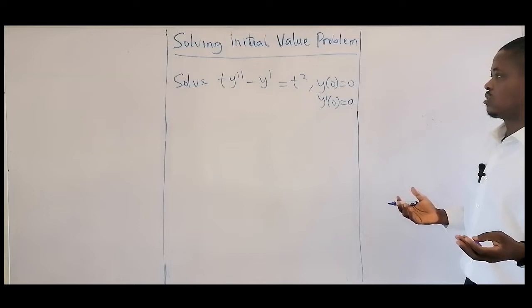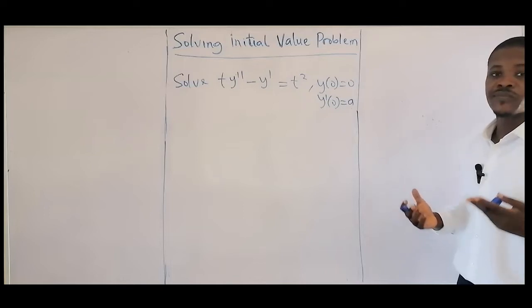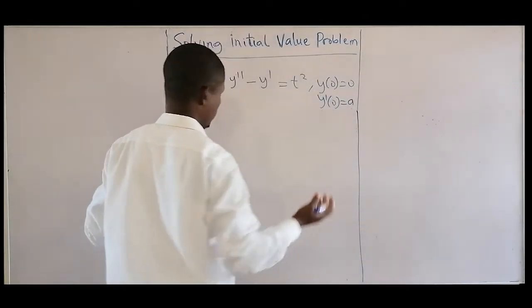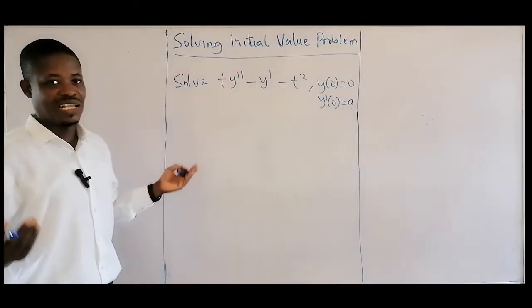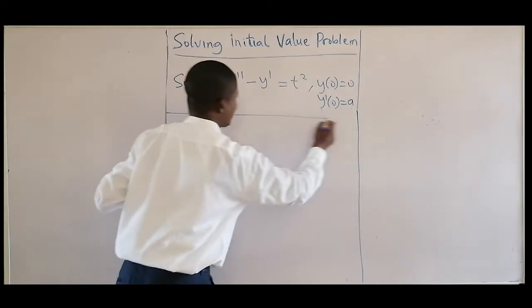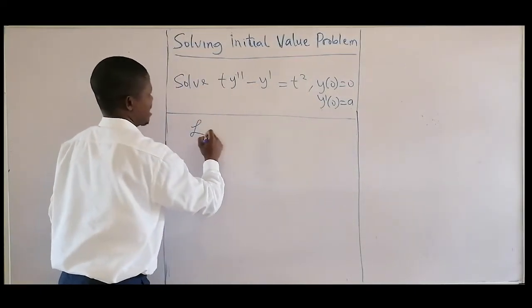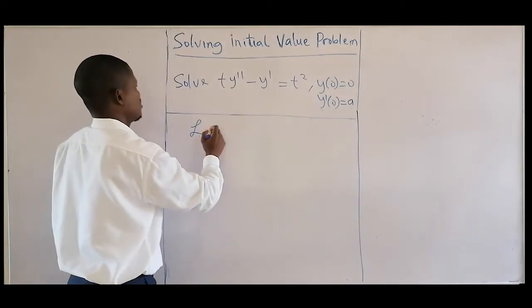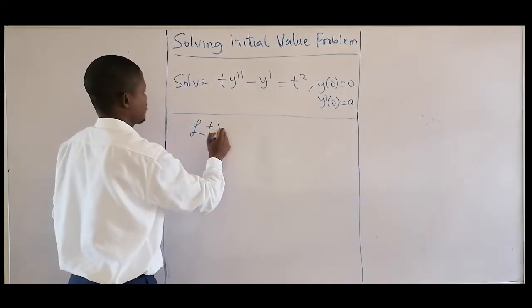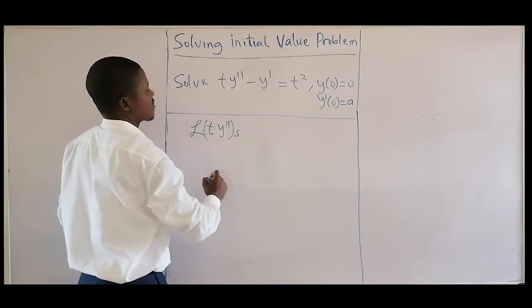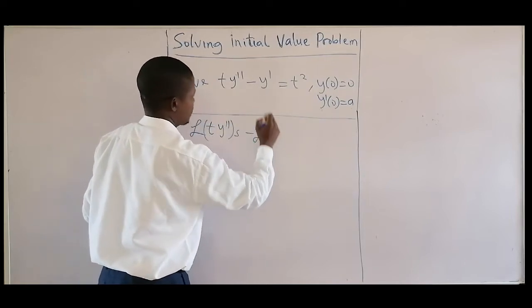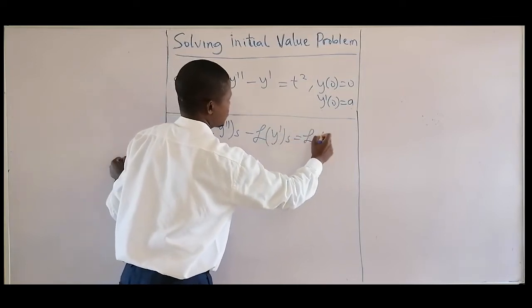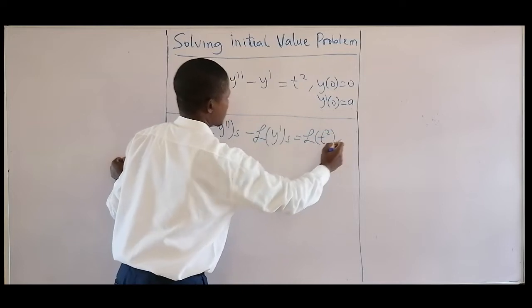So what do we do now? We are told to use Laplace transform. When you have differential equations and you want to use Laplace to solve it, step one is to take the Laplace of the equation. That will be Laplace of T times the second differential, minus Laplace of the fourth differential, equal to Laplace of T squared.